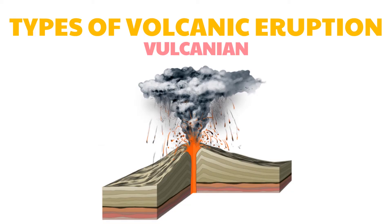The Volcanian type, named after Volcano Island near Stromboli, generally involves moderate explosions of gas laden with volcanic ash. This mixture forms dark turbulent eruption clouds that rapidly ascend and expand in convoluted shapes.